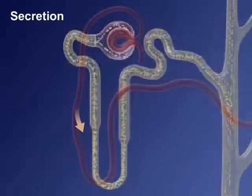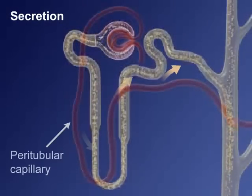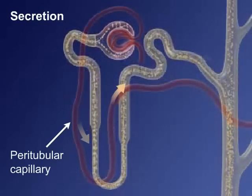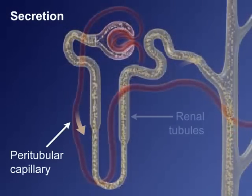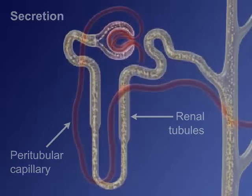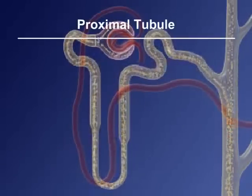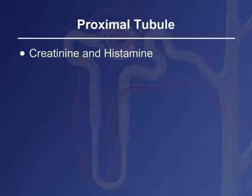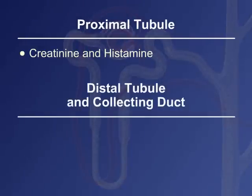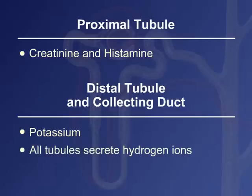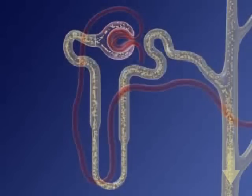In tubular secretion, substances move from the plasma in the peritubular capillaries back into the filtrate in the renal tubules. The proximal tubule secretes creatinine and histamine, and the distal tubule and collecting duct secrete potassium into the filtrate. All the tubules actively secrete hydrogen ions to regulate the pH of the body fluids.